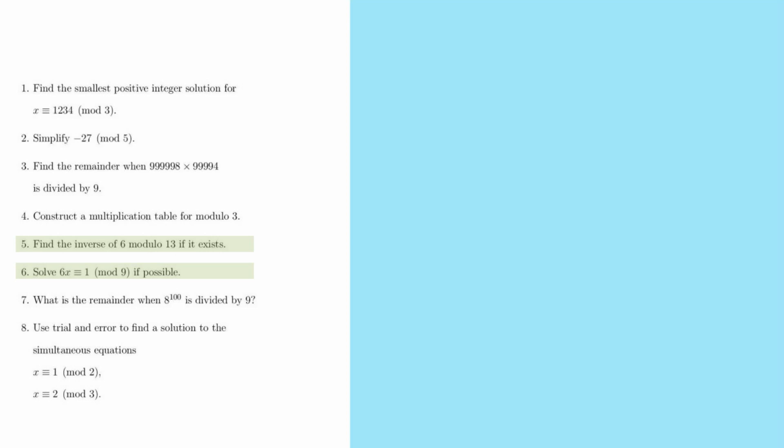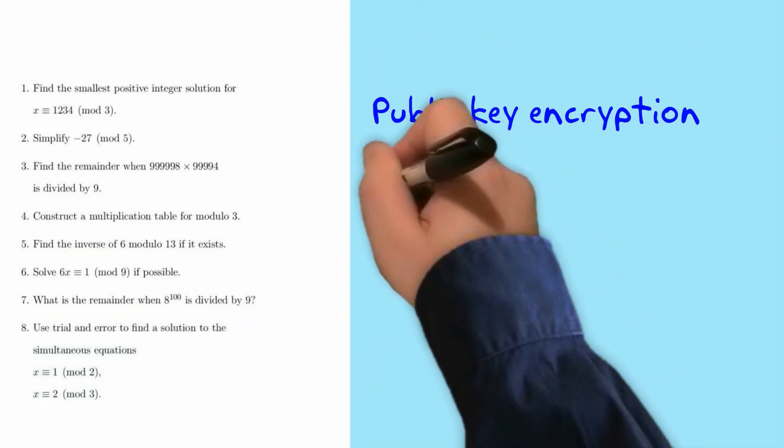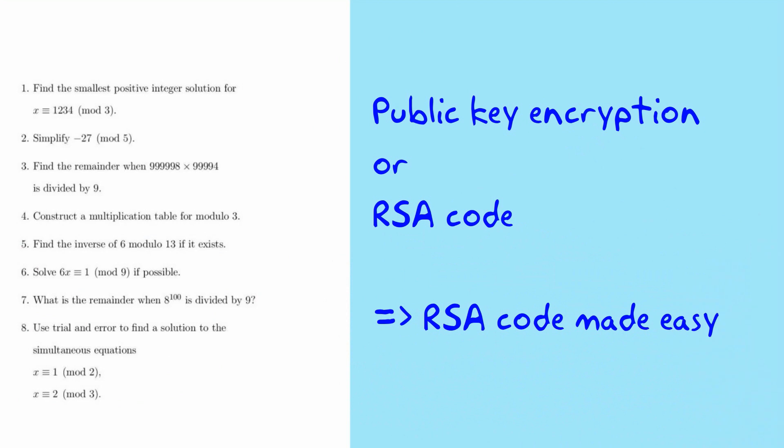If you click on question 7 at any time, it'll take you through to my video, Modular Exponentiation Made Easy. And if you click on question 8, it'll take you through to Chinese Remainder Theorem Made Easy. If you have a question that involves public key encryption or RSA code, that's well beyond what we'll do in this video. You can have a look at my video, RSA Code Made Easy.